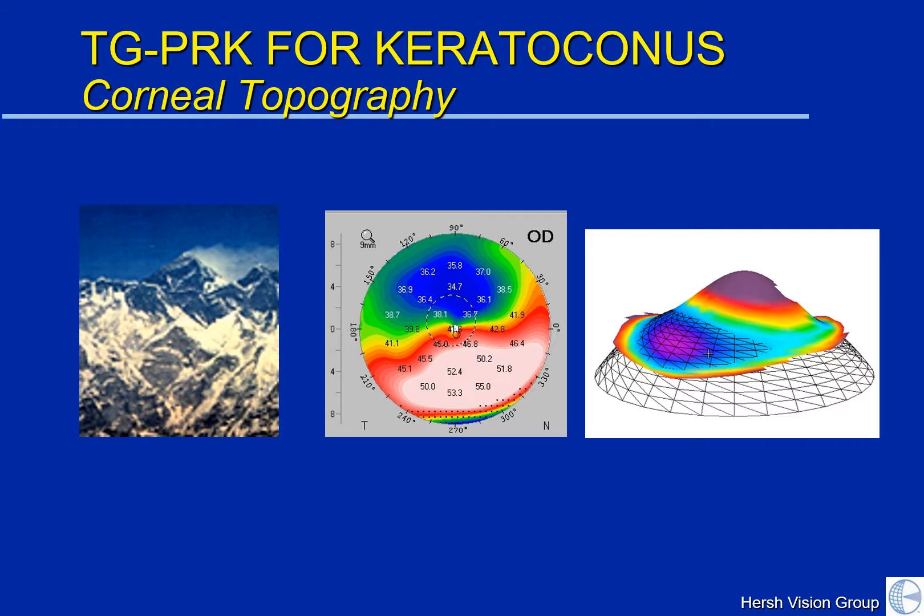In keratoconus, however, as you see here in the center map, there typically is a steepening or elevation below with a flattening up above. So the cornea becomes sagged, bulges a bit, and becomes irregular.